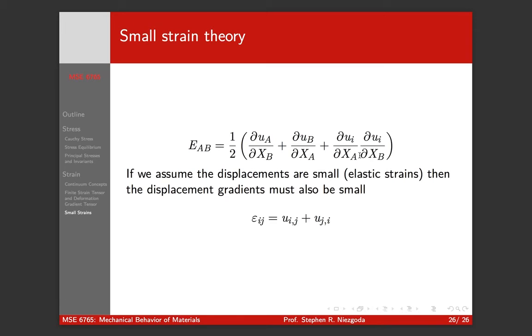And when you square something small it gets even smaller. If we imagine elastic strains where this is on the order of less than 10 to the minus 3, say on the order of 5 times 10 to the minus 4, then 5 times 10 to the minus 4 times 10 to the minus 4 is 10 to the minus 8.